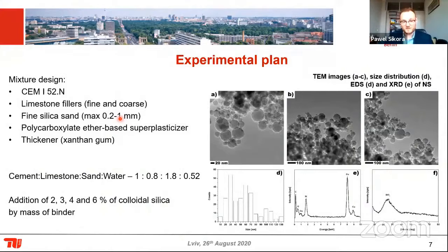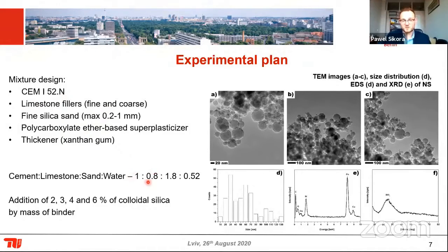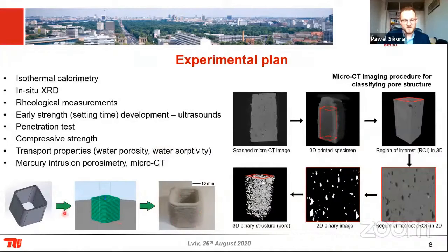In our study, we included pyrogenic silica in different amounts of the binder to a standard cement-based mixture. We developed a mixture consisting of cement, limestone filler — important because cement is extremely expensive compared to other materials, and the cement-to-filler ratio is approximately one-to-one — fine silica sand, and a PCE superplasticizer with xanthan gum as a thickening agent to produce a printable mortar. We developed a code to print such elements — here is an example of a printed element roughly 4×4×4 cm — which we later used to evaluate the microstructure.